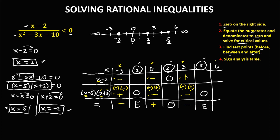For the test point x equals positive 6: x minus 2 gives 6 minus 2, which is positive 4 — positive. For x minus 5: 6 minus 5 is positive 1 — positive. For x plus 2: 6 plus 2 is positive 8 — positive. Positive times positive is positive. Then positive divided by positive gives a positive result.